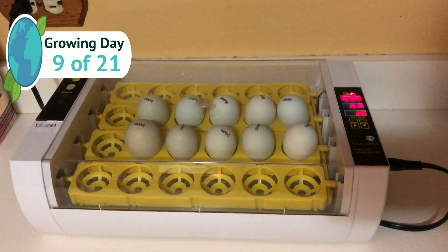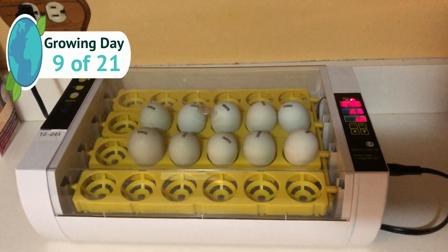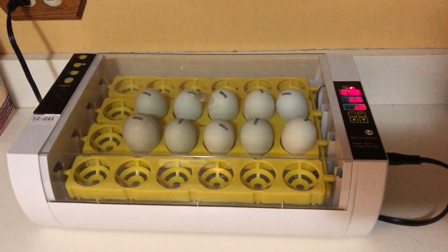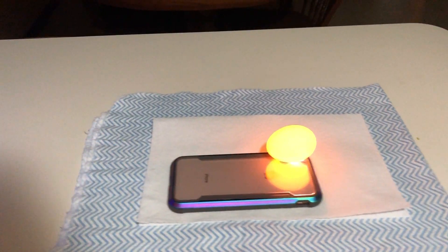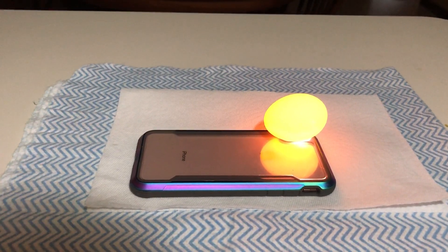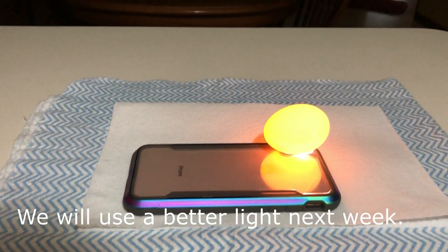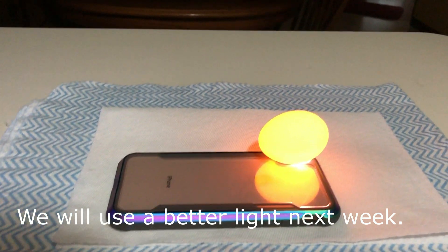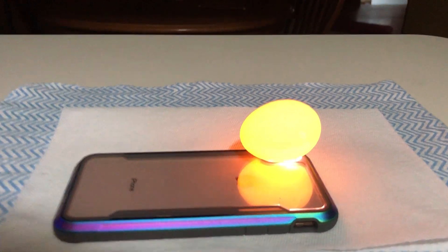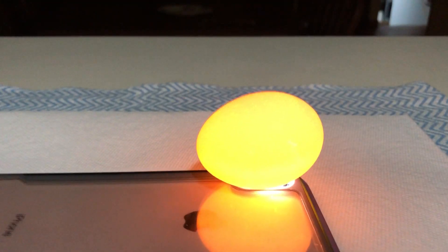I will show you in this video here what an egg without any growth looks like. So let's get to it right now. How we're going to do this - we're going to use a phone's light. This is just a regular egg here, a non-fertilized egg you can buy from the store. As you can see, you'll see no growth in that egg there.